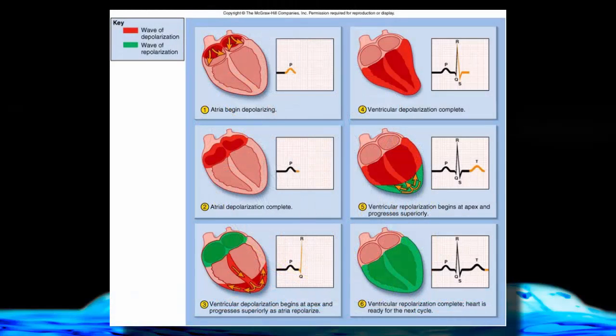Let's now relate the events of the conduction system with what we see on an ECG. First of all, looking at the key, we see that the wave of depolarization within the atria and or the ventricles is going to be colored in red, and the wave of repolarization will be colored in green.